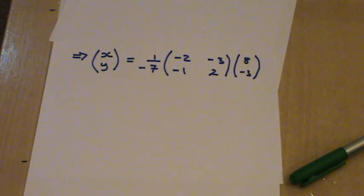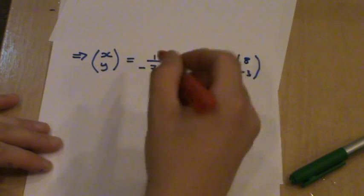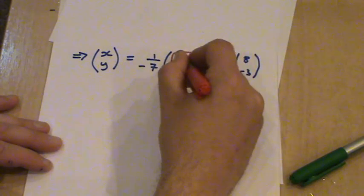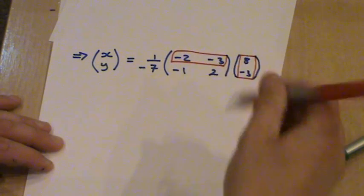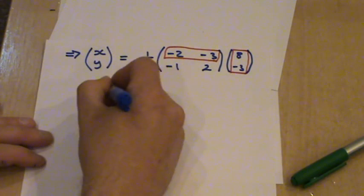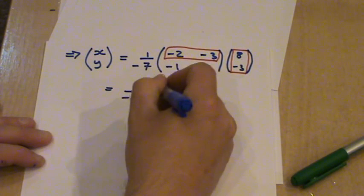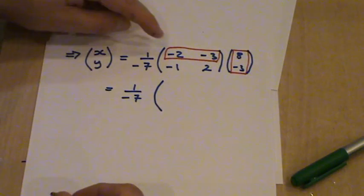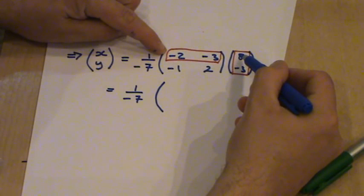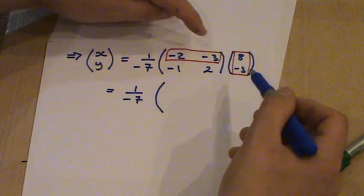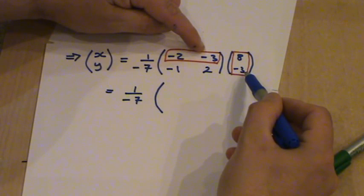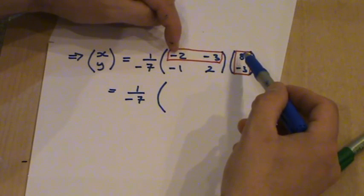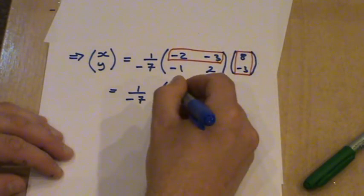So when we're multiplying matrices, we always multiply a row by a column. So we're going to multiply this first row by this column. So this is going to give you 1 over minus 7 on. So we have to multiply the minus 2 by the 8, and that gives you minus 16. Then we have to multiply the minus 3 by a minus 3, and that gives you plus 9. So we've got minus 16 plus 9, which is a minus 7.